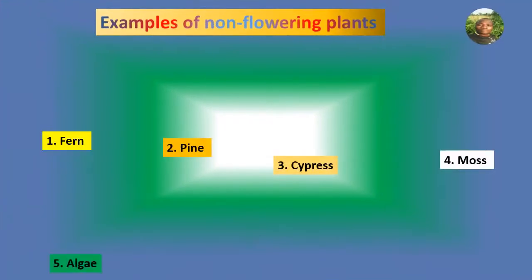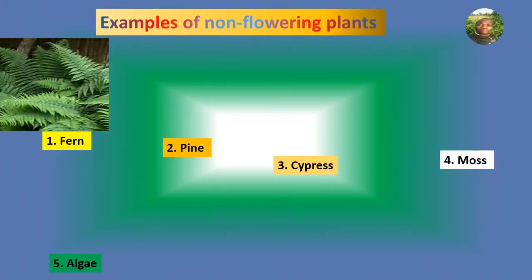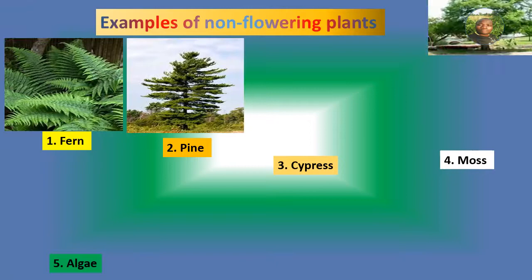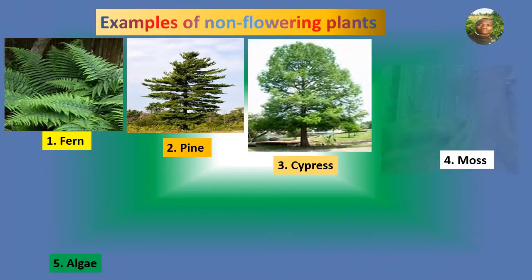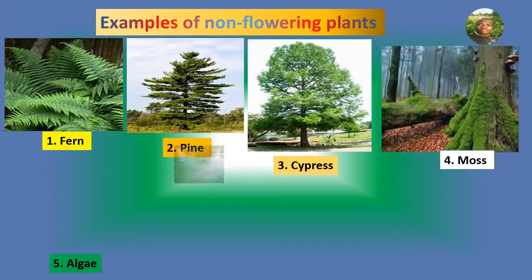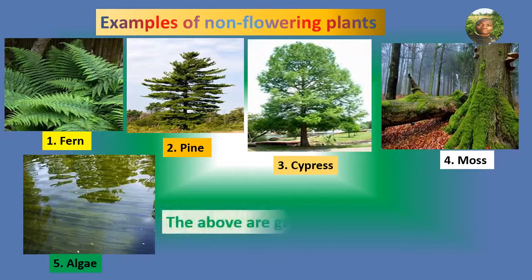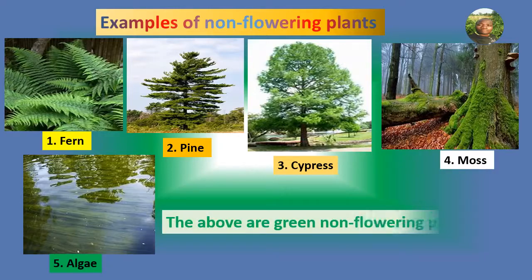Examples of non-flowering plants: 1. Fern 2. Pine 3. Cypress 4. Moss 5. Algae. The above are examples of green non-flowering plants.